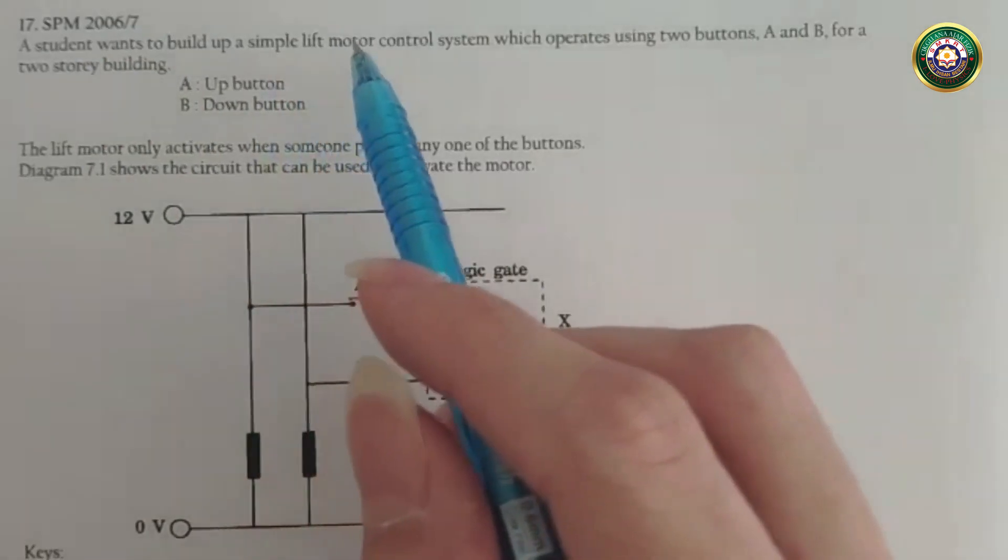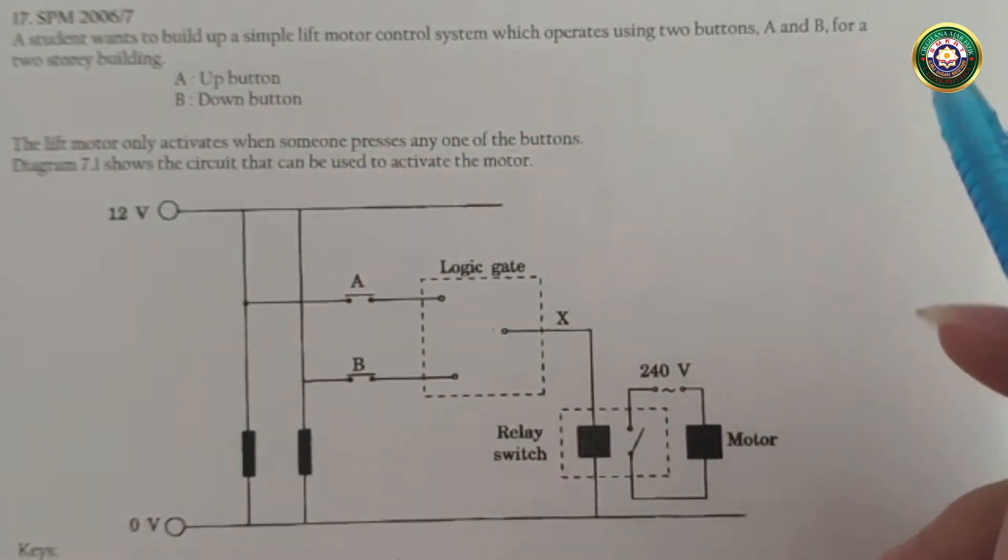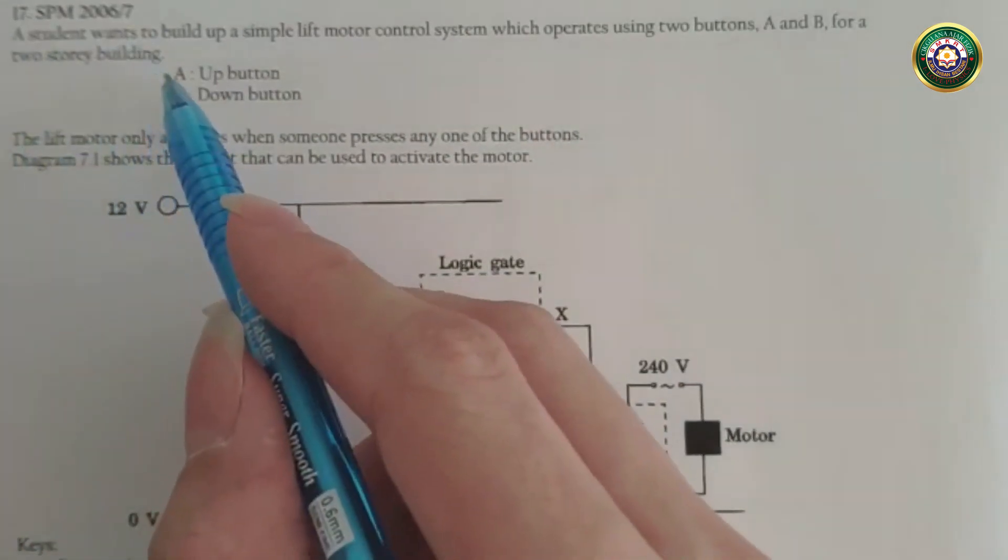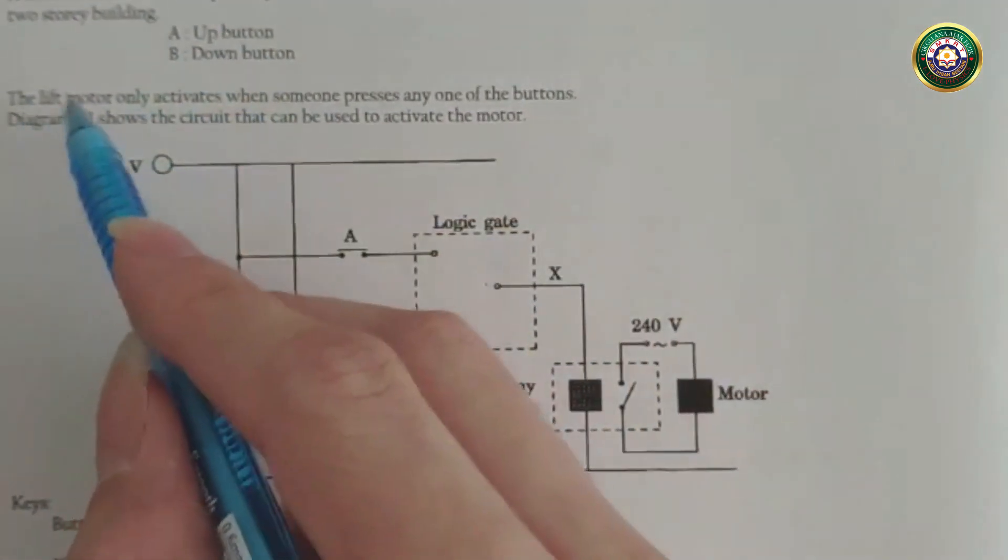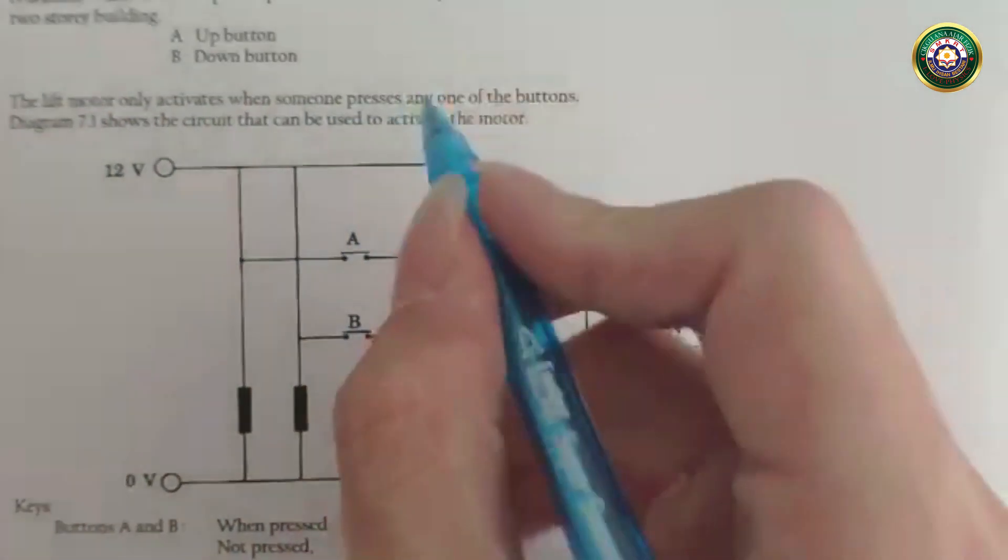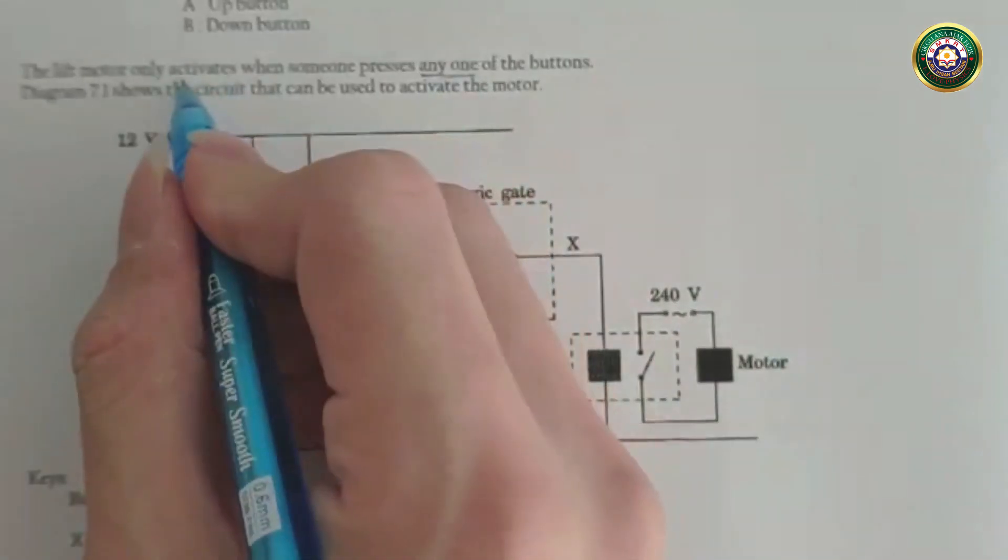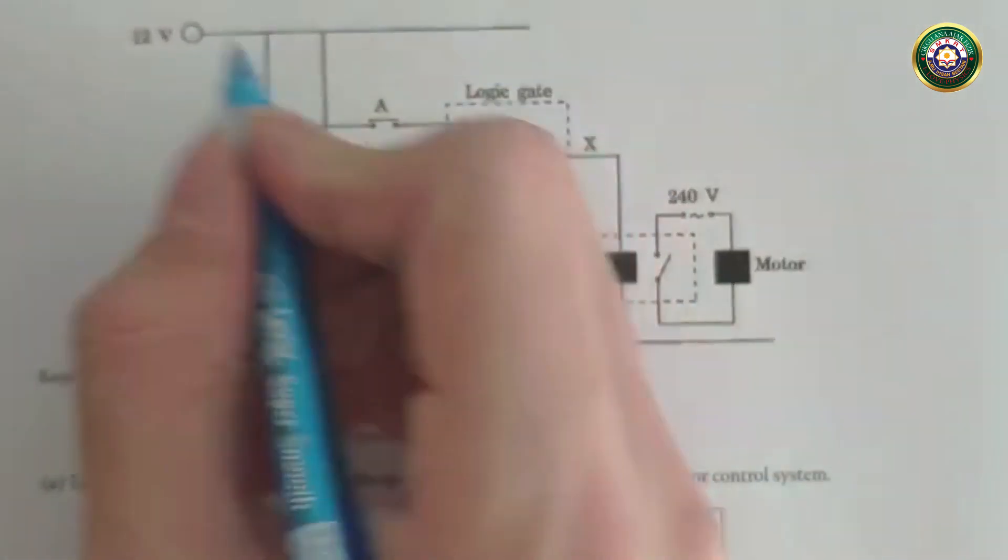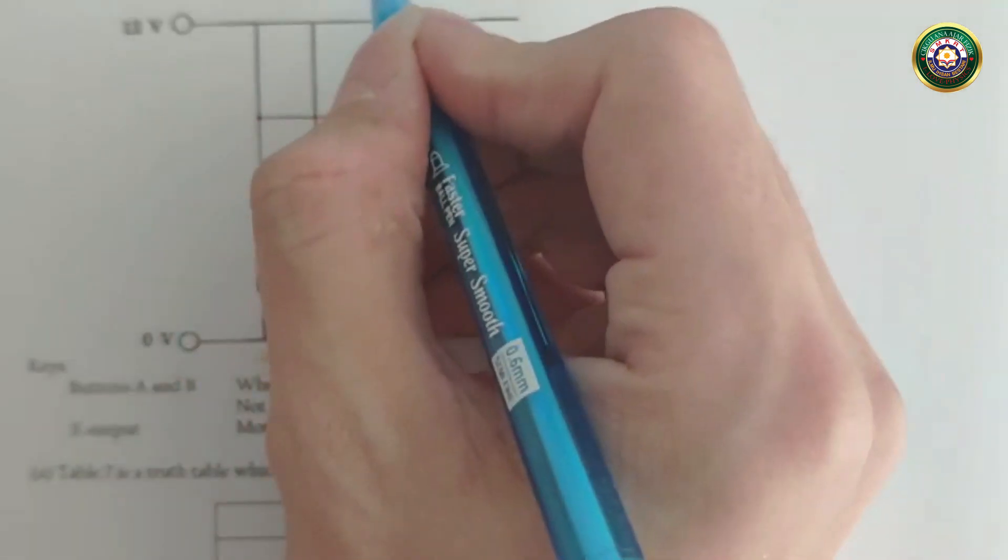A student wants to build a simple lift motor control system which operates using two buttons A and B for a two-story building. A is for up button, B is for down button. The lift motor only activates when someone presses any one of the buttons. Diagram 7.1 shows the circuit that can be used to activate the motor.